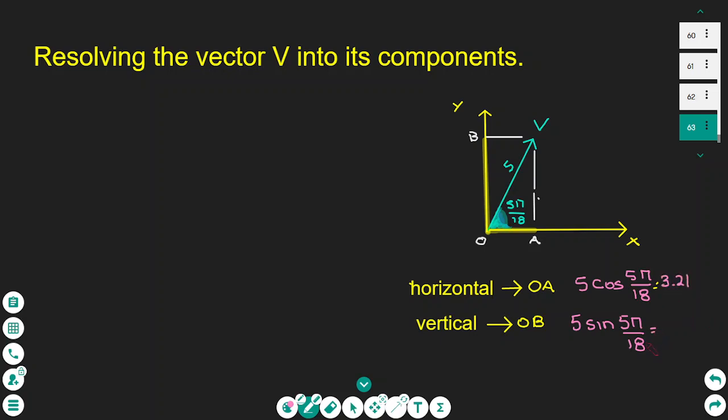The vertical component is 5 times sine 5π/18, which equals 3.83 to two decimal places.